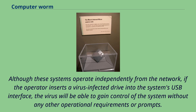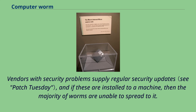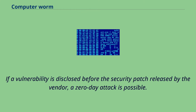Worms spread by exploiting vulnerabilities in operating systems. Vendors with security problems supply regular security updates, and if these are installed on a machine, then the majority of worms are unable to spread to it. If a vulnerability is disclosed before the security patch is released by the vendor, a zero-day attack is possible.